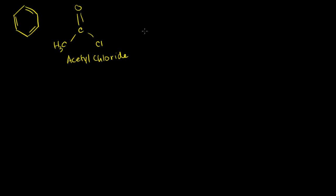And we're going to have an aluminum chloride catalyst. A catalyst means that it participates in the reaction, but it enters and exits the reaction as the same molecule — it just catalyzes it. It doesn't disappear; it changes halfway but then goes back to what it was before. We have aluminum chloride bonded to three chlorines. The first step of this reaction is to turn this acetyl chloride into a good electrophile — something that's really good at nabbing electrons, so good that it can break the aromaticity of the benzene ring and add itself to it.